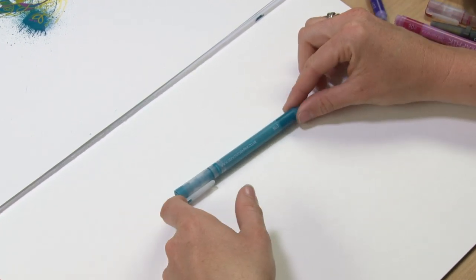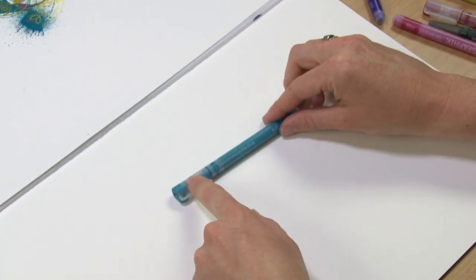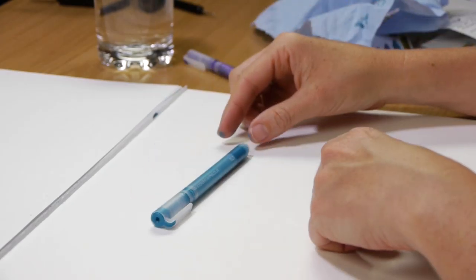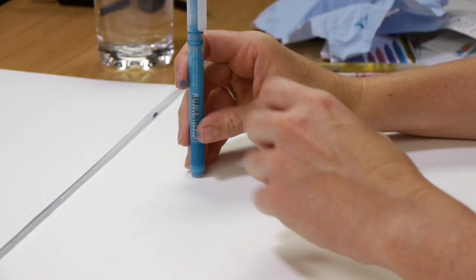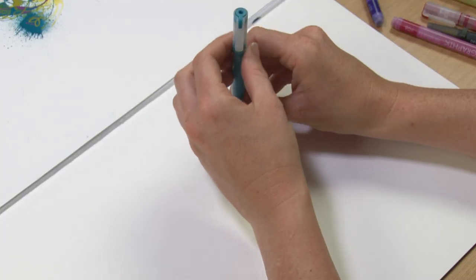So it's really important to keep the pen lid on when you're not using it and to keep it in a horizontal position because if it stands like this the ink drains away from the nib and starts to dry out.